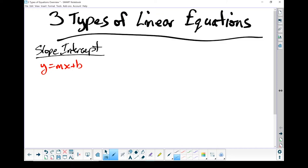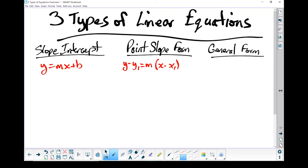After that, we went through the point-slope form. It looked like y minus y1 equals m times x minus x1. Last but not least, we went through general form. It looked like ax plus by plus c equals 0.